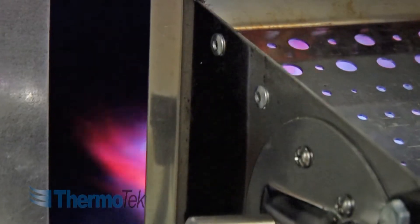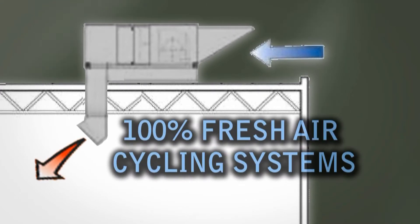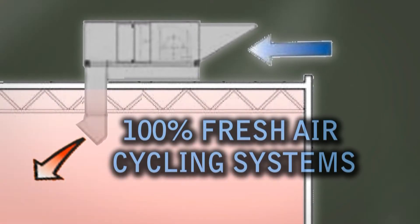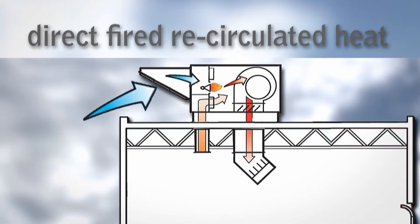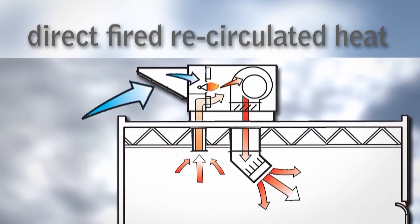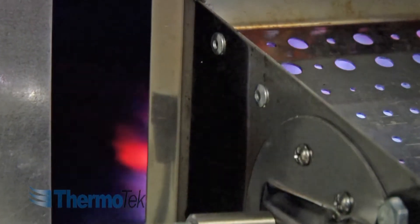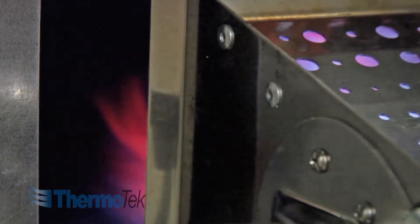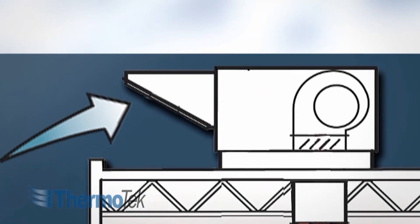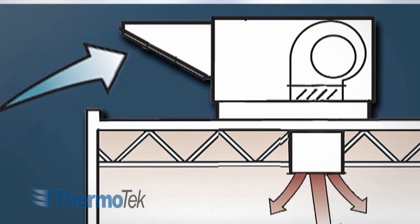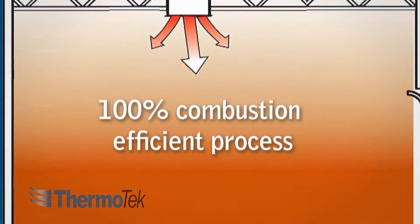When using direct heating methods, such as direct radiant heat, 100% fresh air high temperature direct fired systems, and direct fired recirculated heat systems, all of the heated energy is conserved by safely introducing it into the space. Direct fired refers to heating equipment that burns gas directly into the fresh air stream, resulting in the most efficient method of heat transfer and is a 100% combustion efficient process.